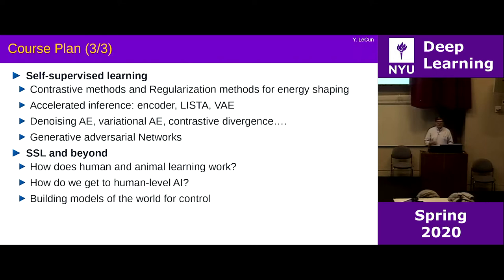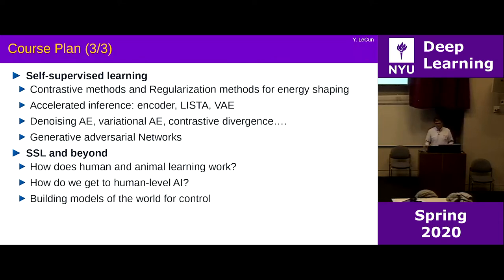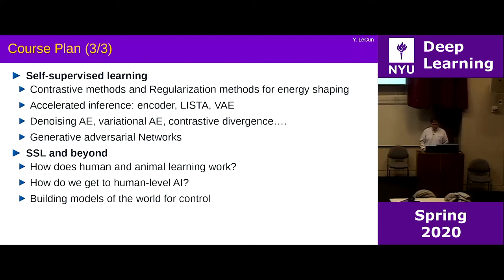There are things you may have heard of: variational autoencoders, denoising autoencoders, BERT — those transformer architectures trained for natural language processing through self-supervised learning, which are a special case of denoising autoencoders. A lot of those things can be understood in the context of this energy-based approach. That also includes generative adversarial networks, which many of you have heard of.